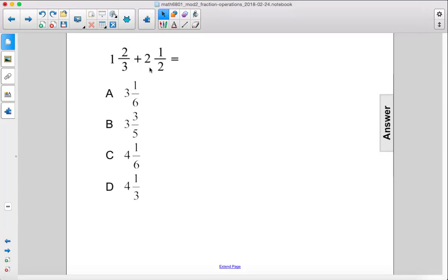One and two-thirds plus two and one-half. Okay, so our common denominator here is going to, let's just do three times two, which gives us six.